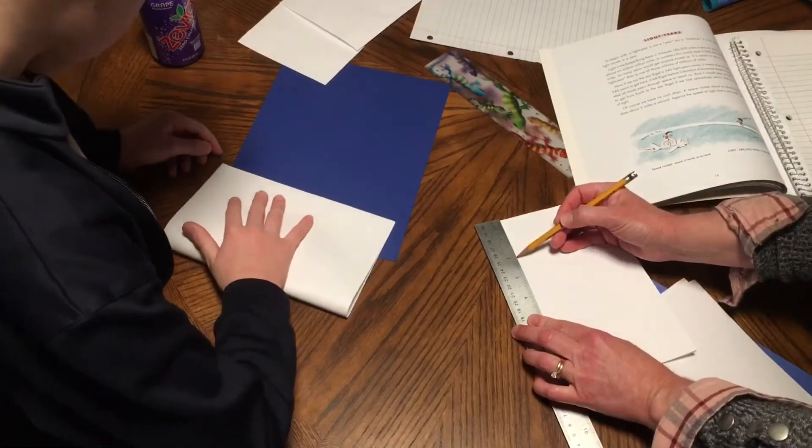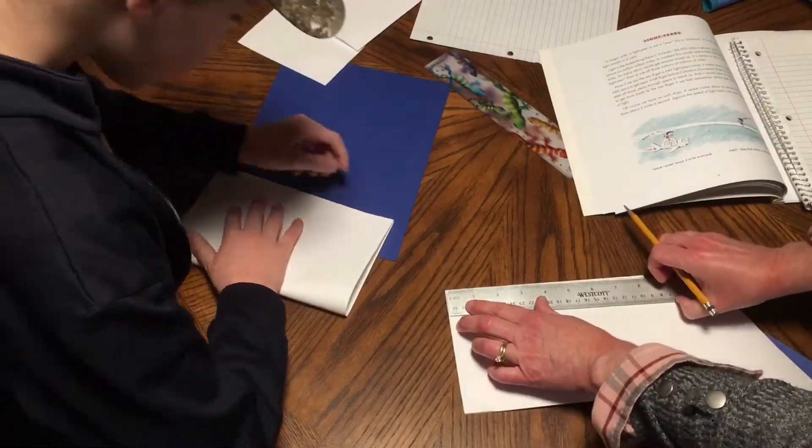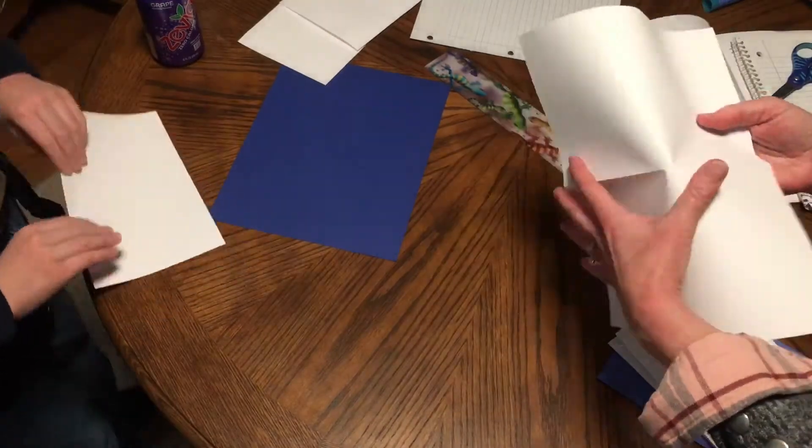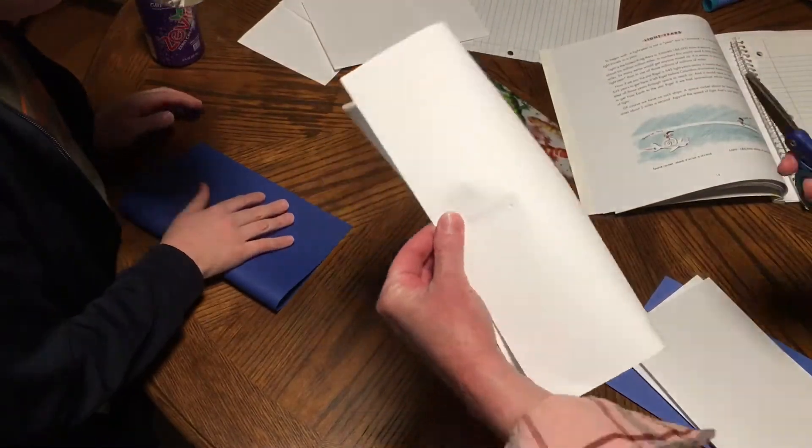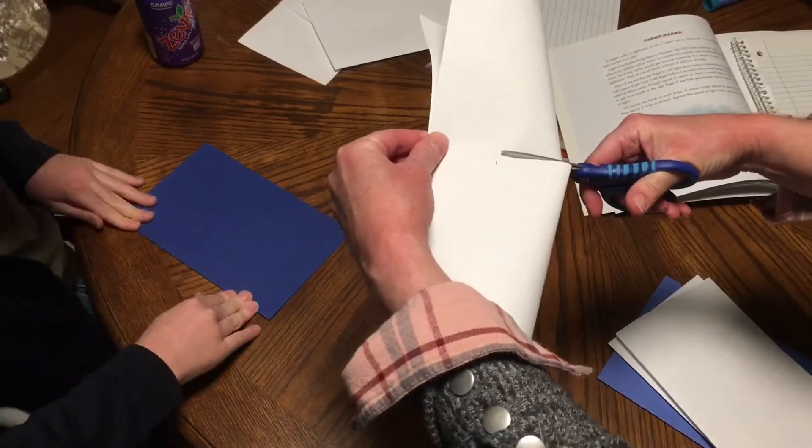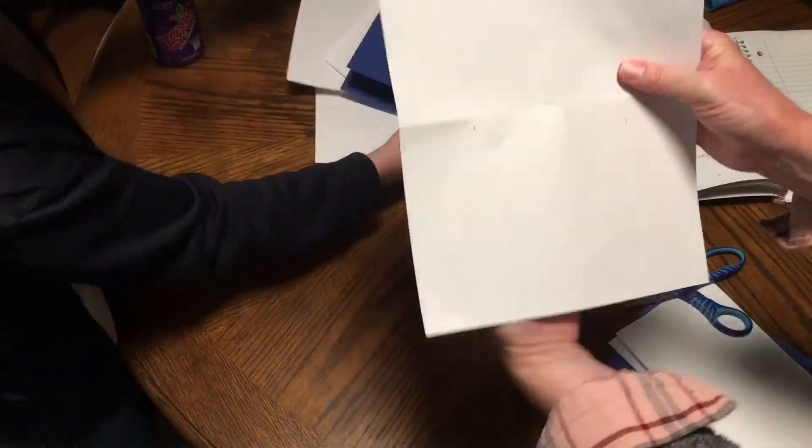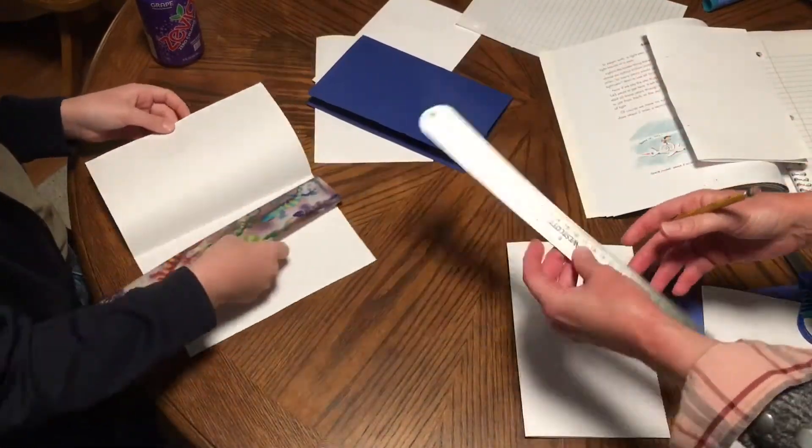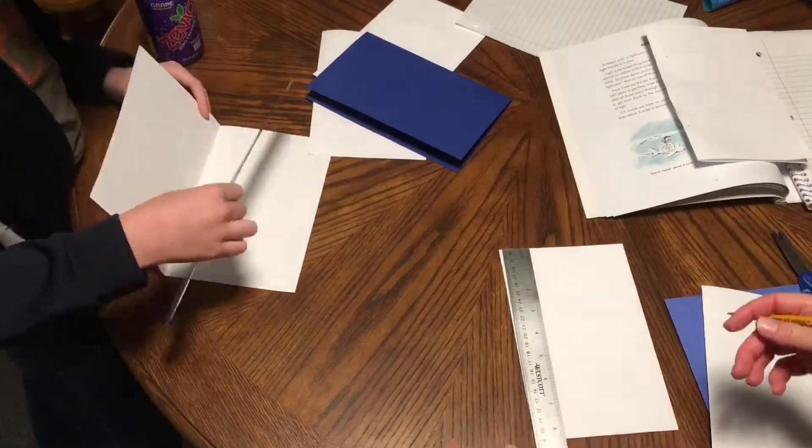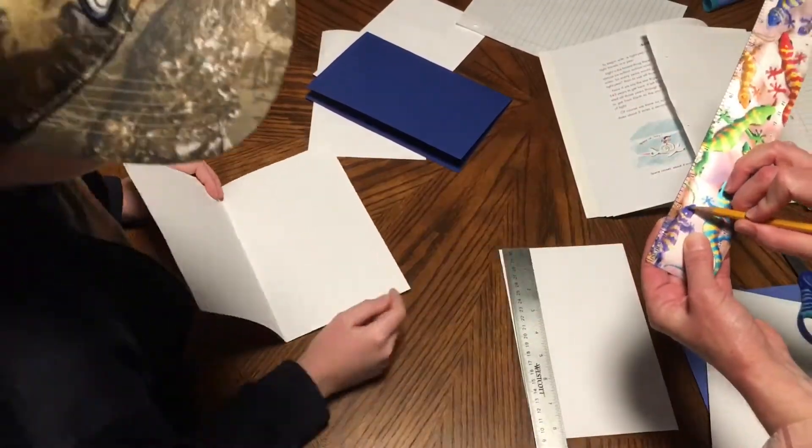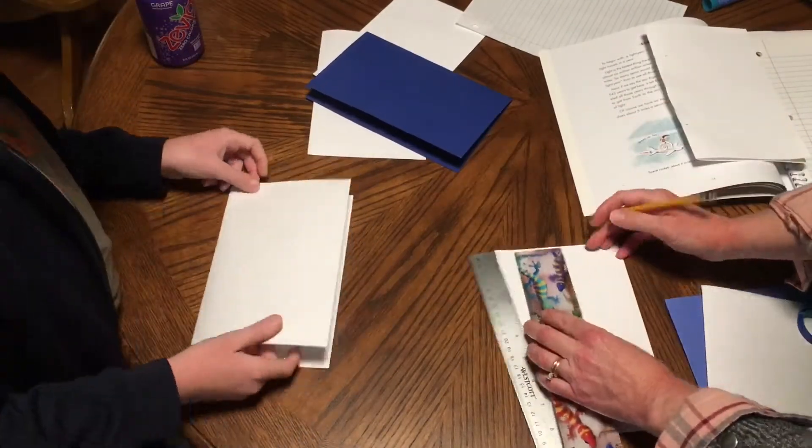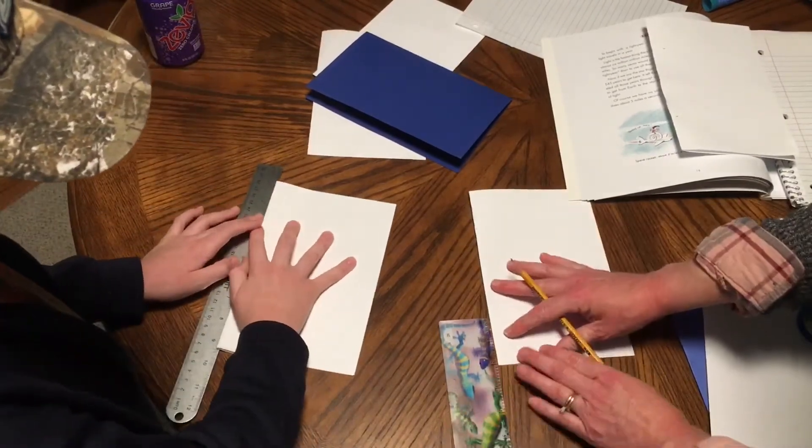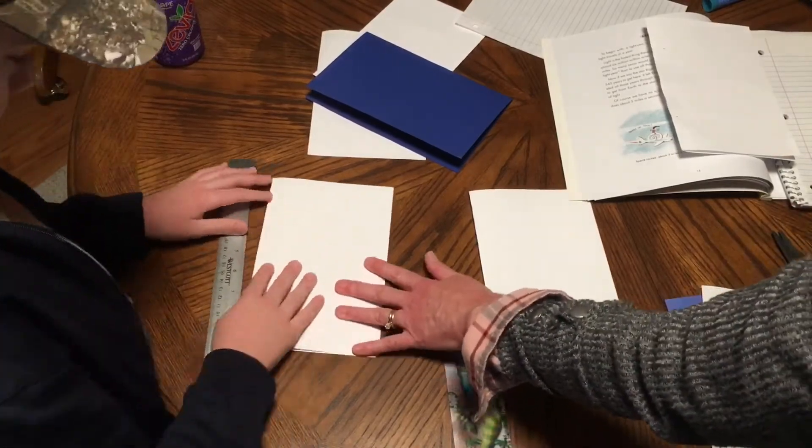We're following the directions. Measure two inches on the fold. You will measure two inches on each side, as I'm doing there. I'm getting Marshall to fold all the papers for me. Then you'll open it and fold it down and just cut a slit up to those two inches.